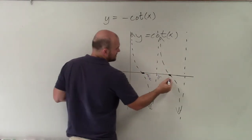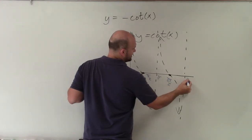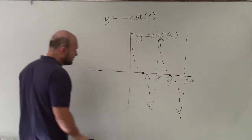So therefore, this is pi halves. Pi, 2 pi, this would be 3 pi over 2, and that is 2 pi.